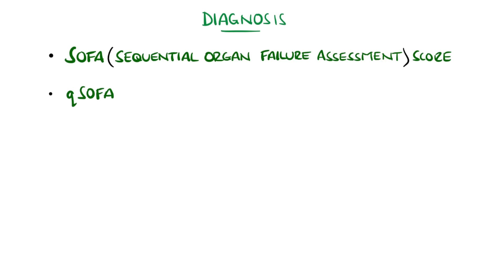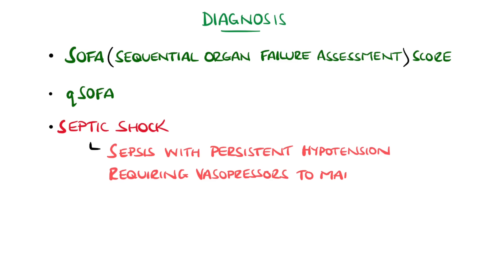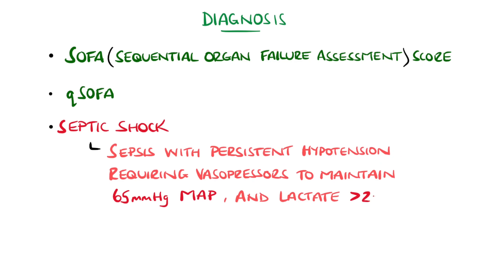For septic shock, the definition is sepsis with coexisting persistent hypotension, requiring vasopressors to maintain a mean arterial pressure above 65 mmHg and a serum lactate above 2 mmol/L.